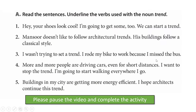After this, let's do activity A. Read the sentences and underline the verbs used with the noun 'trend'. So for number one, we're going to do this together. That is: 'Hey, your shoes look cool. I'm going to get some too. We can start a trend.' So we have the noun 'trend', and the verb that goes with it in its collocation sense is 'start' — we can start a trend.